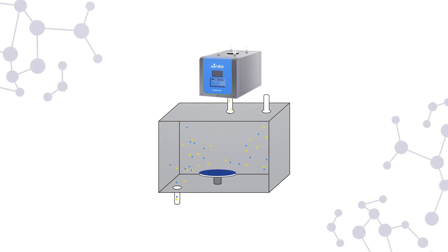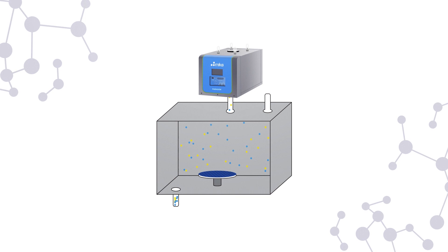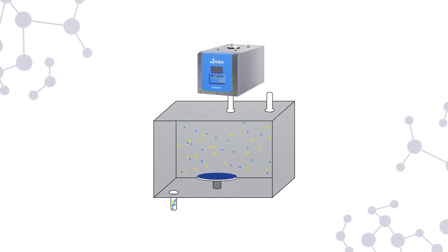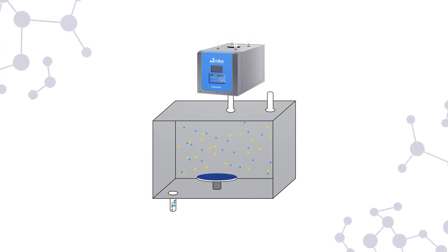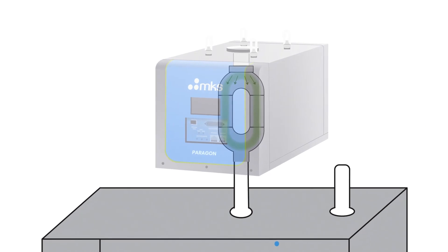Remote plasma sources generate plasma gas, generally using oxygen or fluorine, to create radicals which react with either the wafer surface or chemical residues inside the chamber to create process byproducts which are then removed from the chamber.